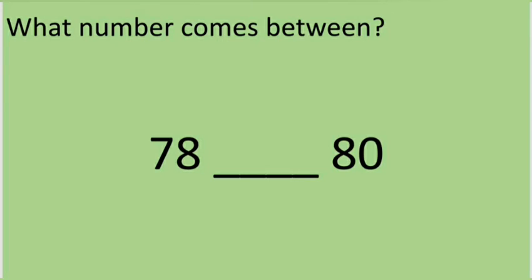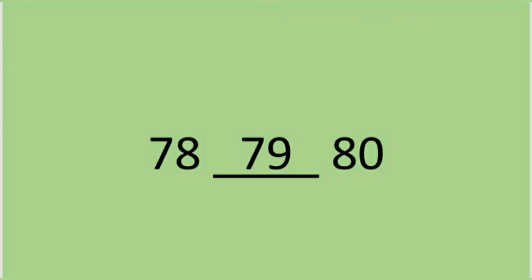Now last one is, what number comes between 78 and 80? It's 79. 79 is the number that comes between 78 and 80. Wow, you kids have got it!